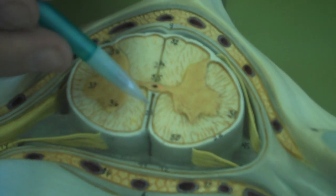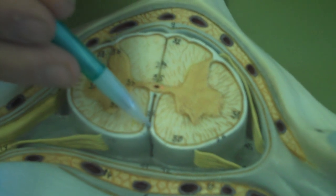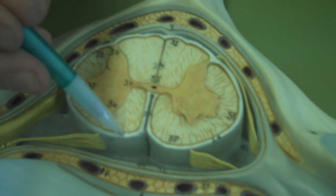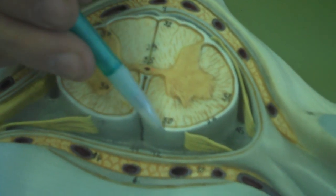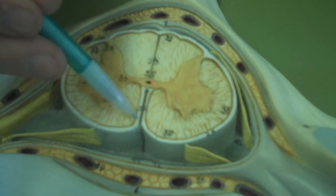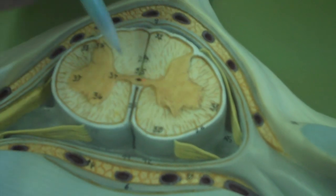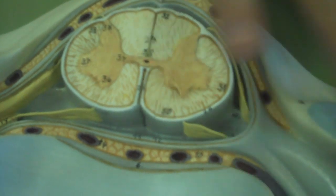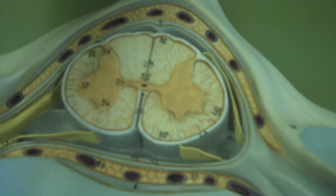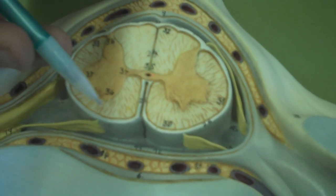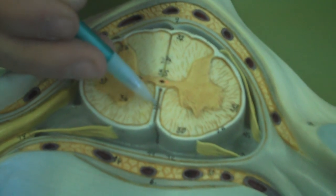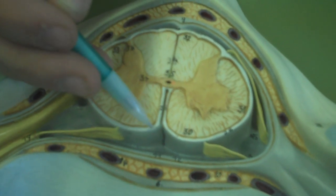One important thing to note about these is that the anterior median fissure has the external layer of the spinal cord actually wrapping in on it. So if such time comes when you have just the spinal cord without the vertebrae around it, you'll be able to tell which way is the anterior and which way is the posterior based on this structure being folded in on itself.